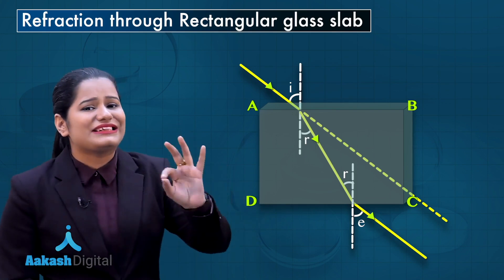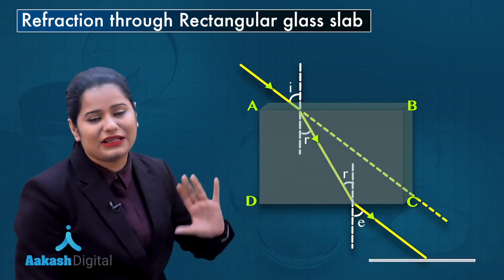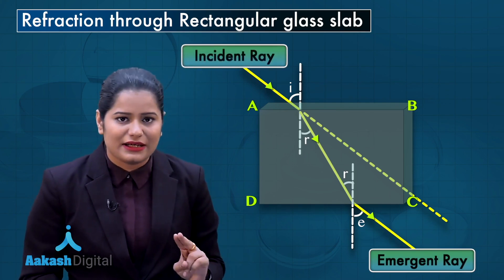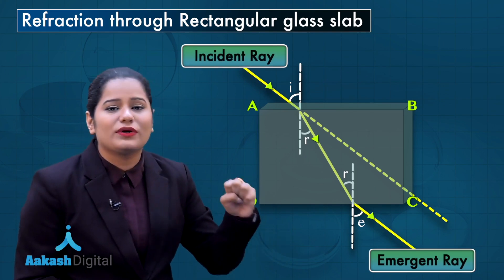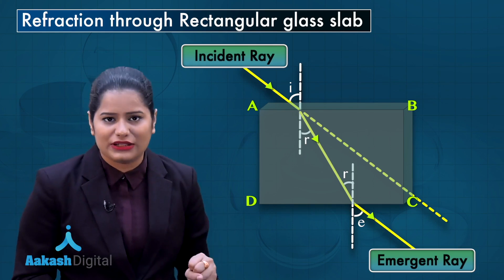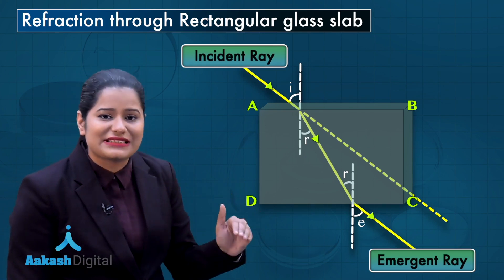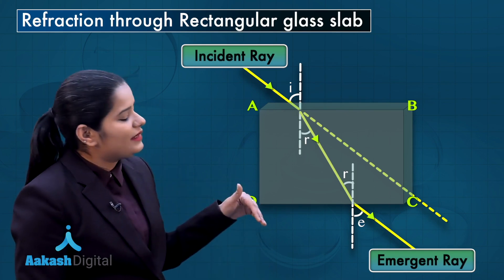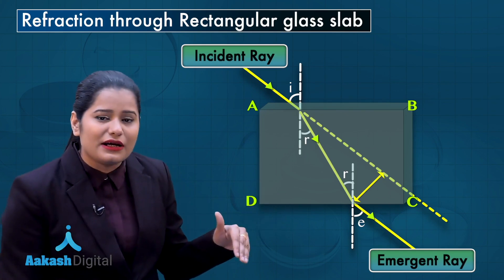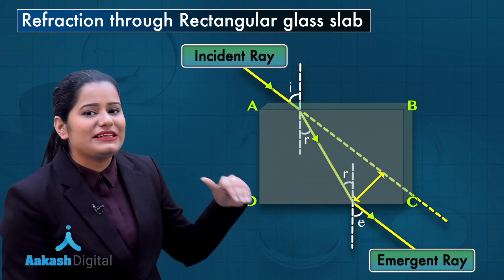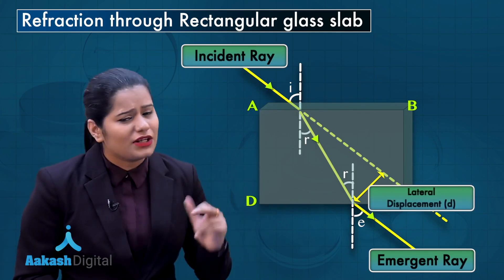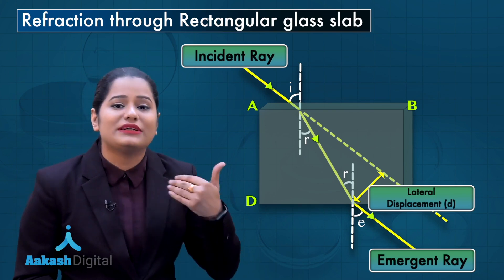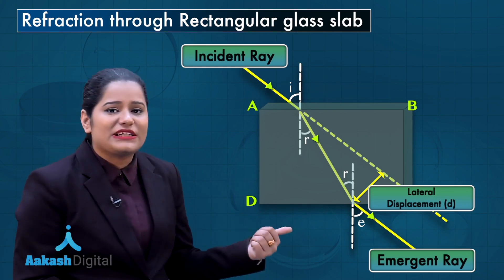The ray emerging out of the rectangular glass slab is called the emergent ray. In the figure, you can clearly see that this emergent ray is parallel to the incident ray. So whenever refraction of light happens through a rectangular glass slab, there is no deviation in the path of light — the direction of the incident ray and emergent ray is the same. However, there is a shift: the emergent ray is displaced perpendicular to itself. This perpendicular distance between the incident and emergent ray is called the lateral displacement.